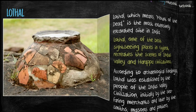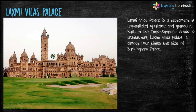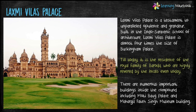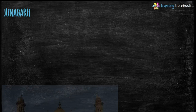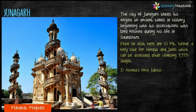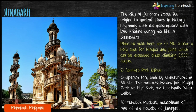Next site is Lakshmi Vilas Palace, famous for its grand architecture — almost four times the size of Buckingham Palace. Till today, Lakshmi Vilas Palace is the residence of the Royal Family of Baroda. Next is Junagadh, which has long associations with Lord Krishna during his life in Saurashtra. Places to visit include Mount Girnar, Ashoka's Rock Edicts, Uparkot Fort, and Mahabat Maqbara, also famous as Gujarat's own Taj Mahal.